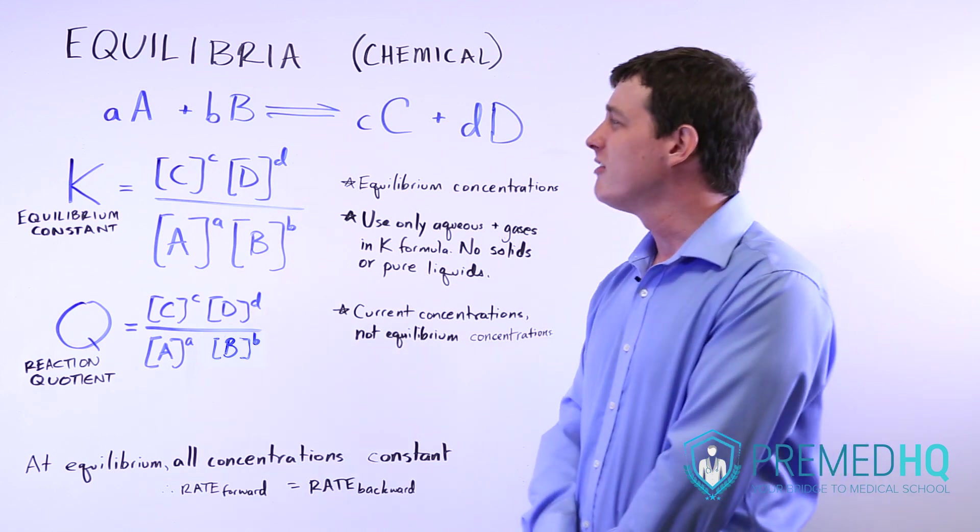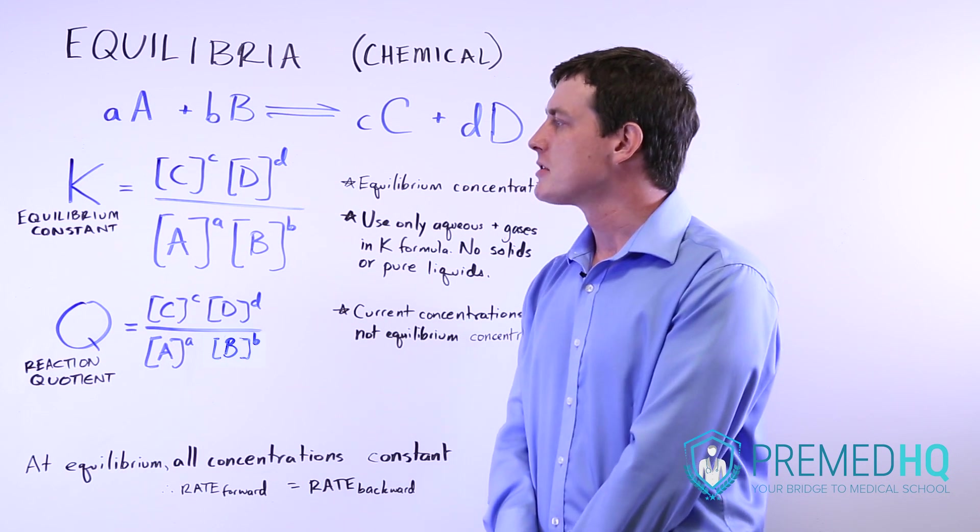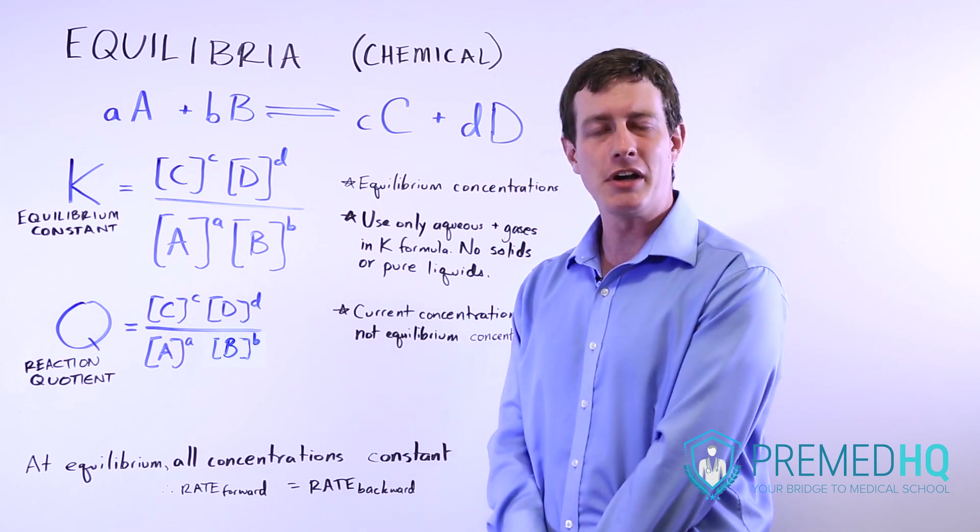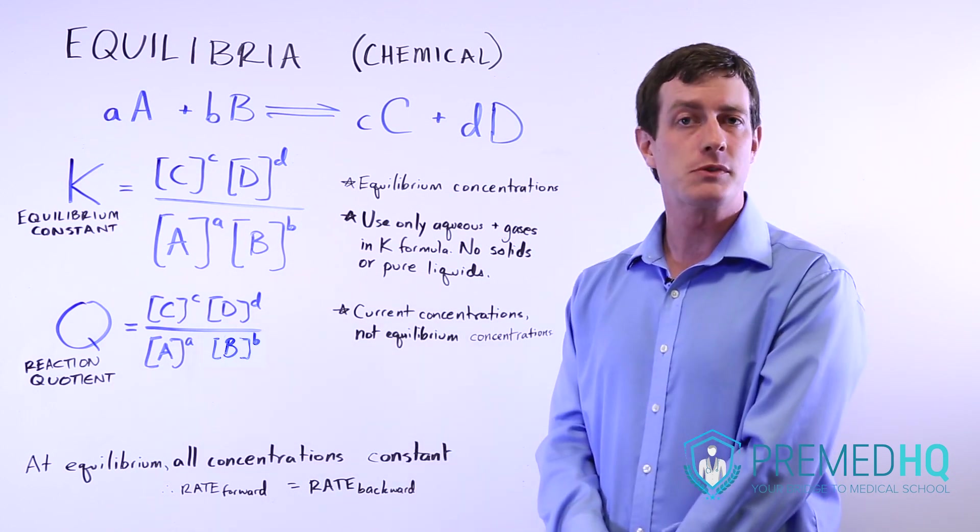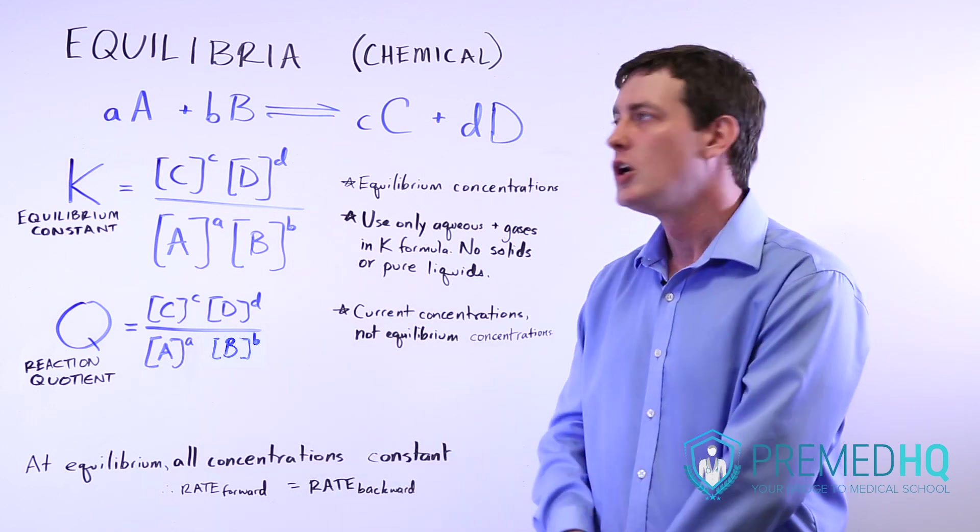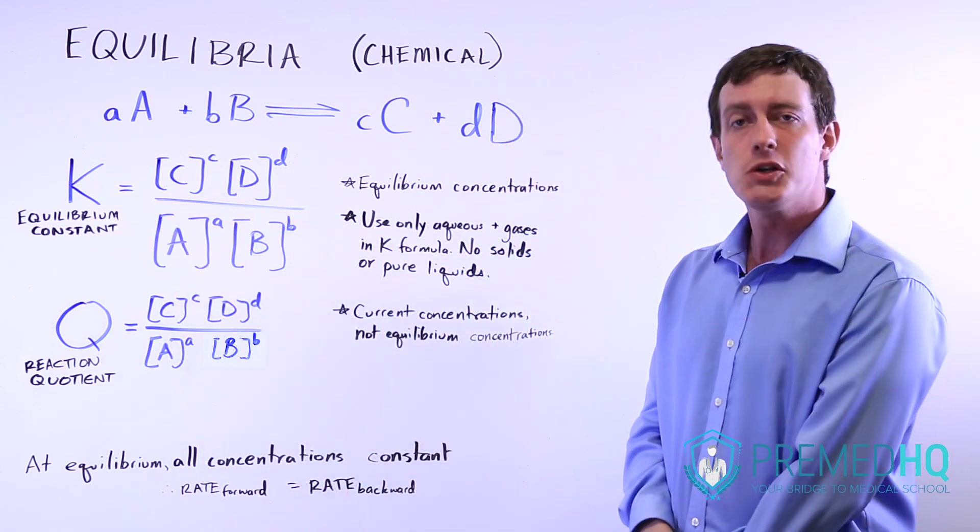In chemistry, whenever you see a capital K and it's not defining potassium, capital K represents an equilibrium of some sort. You might have Ka for an acid, Kb for a base, Ksp as your solubility product, or you might simply have K like this. And K is the equilibrium constant.